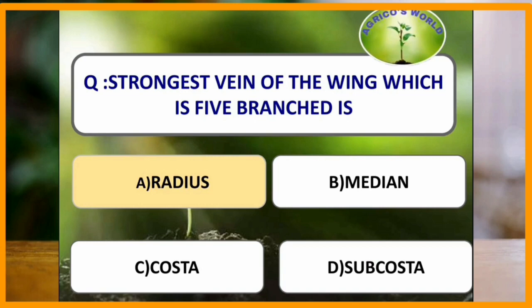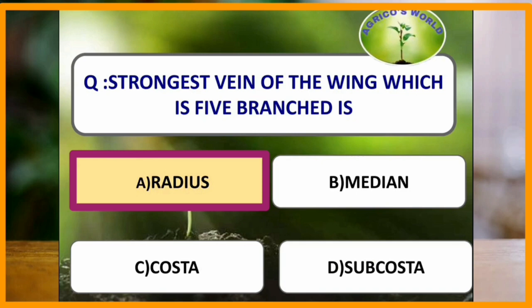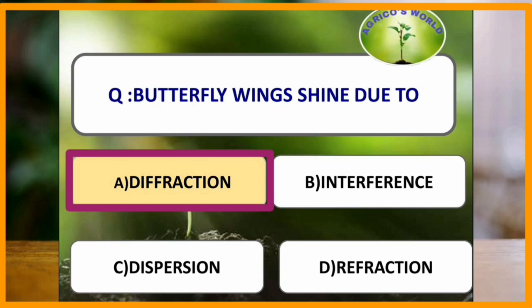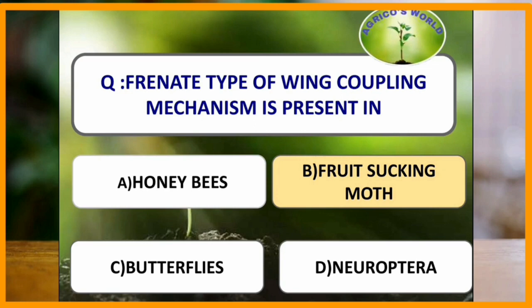The strongest vein of the wing, which is five-branched, is the radius. Radius is the strongest vein of the wing which is five-branched. Butterfly wings shine due to which phenomenon? Butterfly wings shine due to diffraction. Frenate type of wing coupling mechanism is present in fruit-sucking moth.